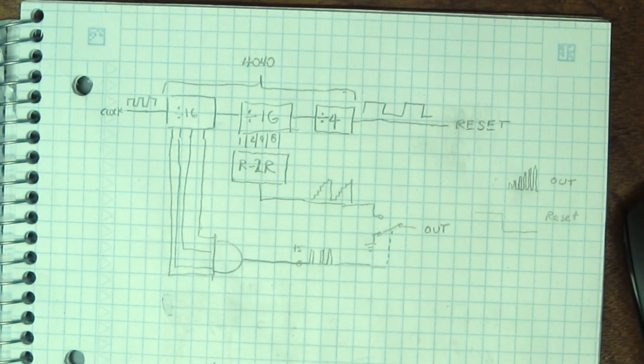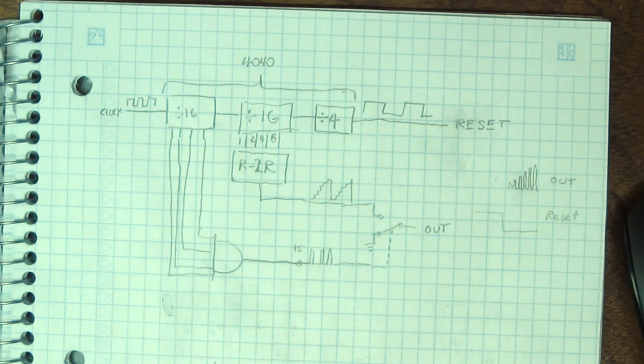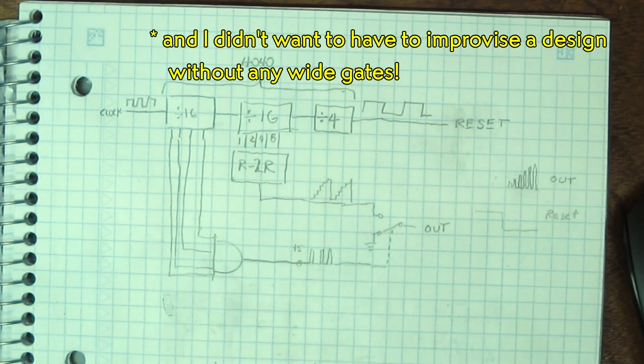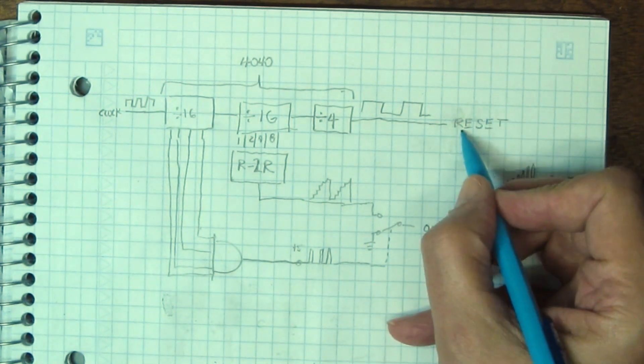I could have come up with some Boolean function of the divider outputs to give me the delayed reset. But I didn't want to disturb what I already had on the breadboard, so I decided simply to introduce an analog delay.